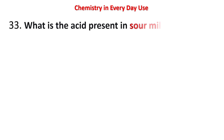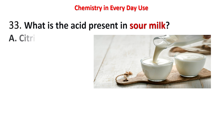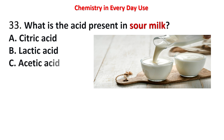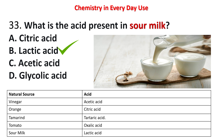Next question: what is the acid present in sour milk? Options: citric acid, lactic acid, acetic acid, glycolic acid. The answer is lactic acid. You should also remember other natural acids: vinegar contains acetic acid, orange contains citric acid, tamarind has tartaric acid, tomato has oxalic acid, and sour milk has lactic acid.